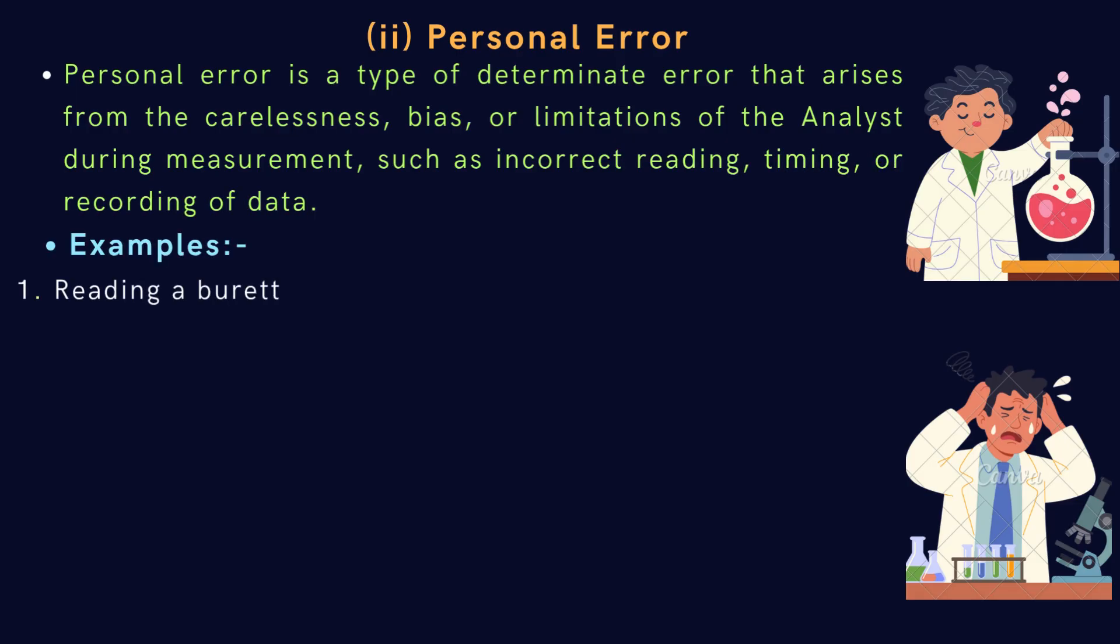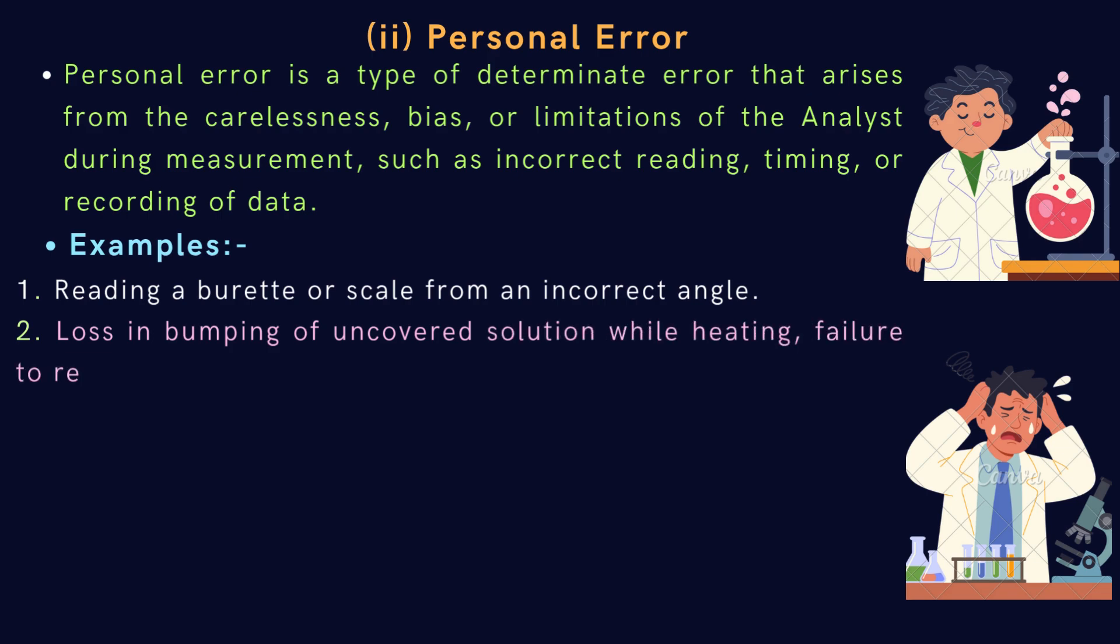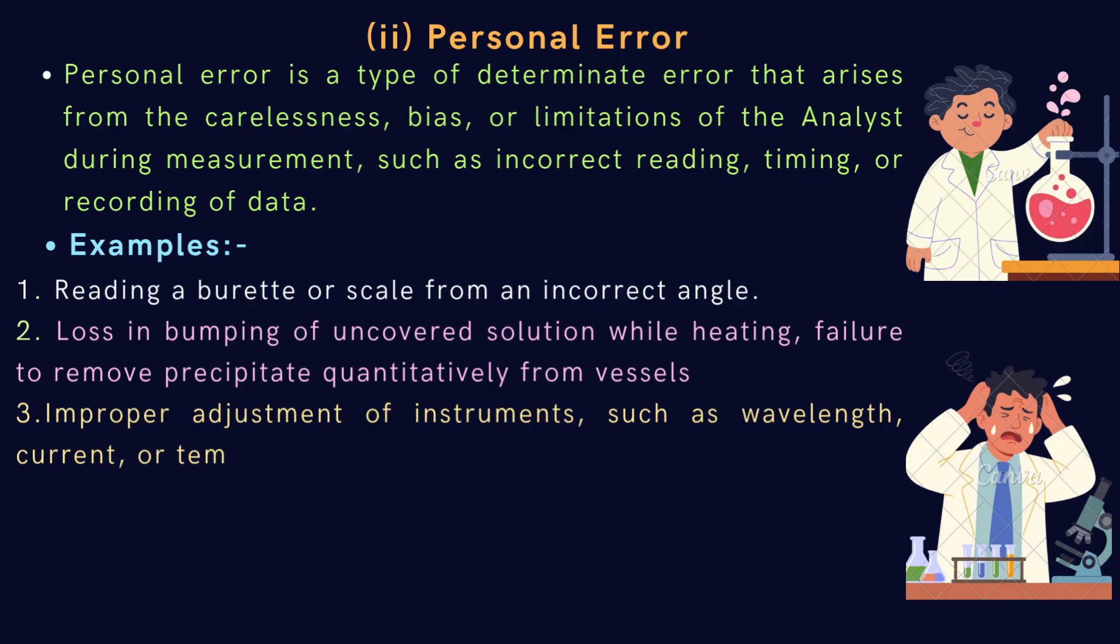Let's look at some examples. First is reading a burette or scale from an incorrect angle. Second is loss in bumping of uncovered solution while heating, failure to remove precipitate quantitatively from vessels. Third is improper adjustment of instruments, such as wavelength, current, or temperature.